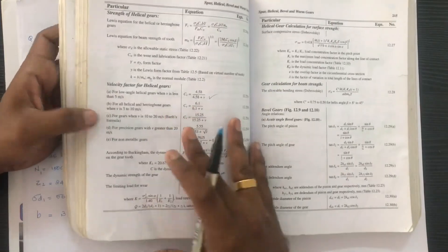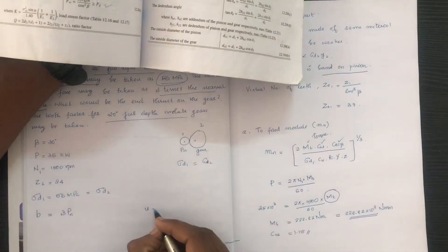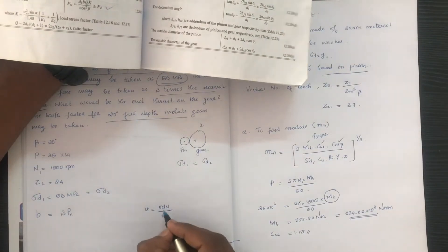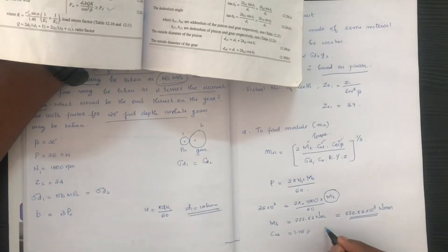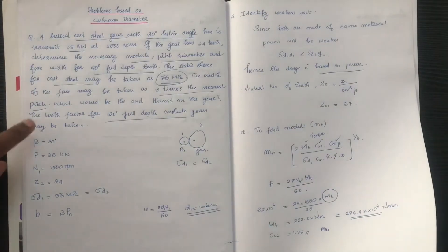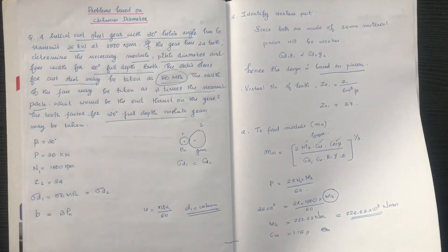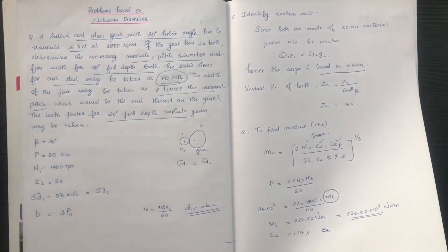Now we calculate the pitch line velocity. Since the velocity is not yet known, we assume cv is equal to 0.5 as an initial assumption.